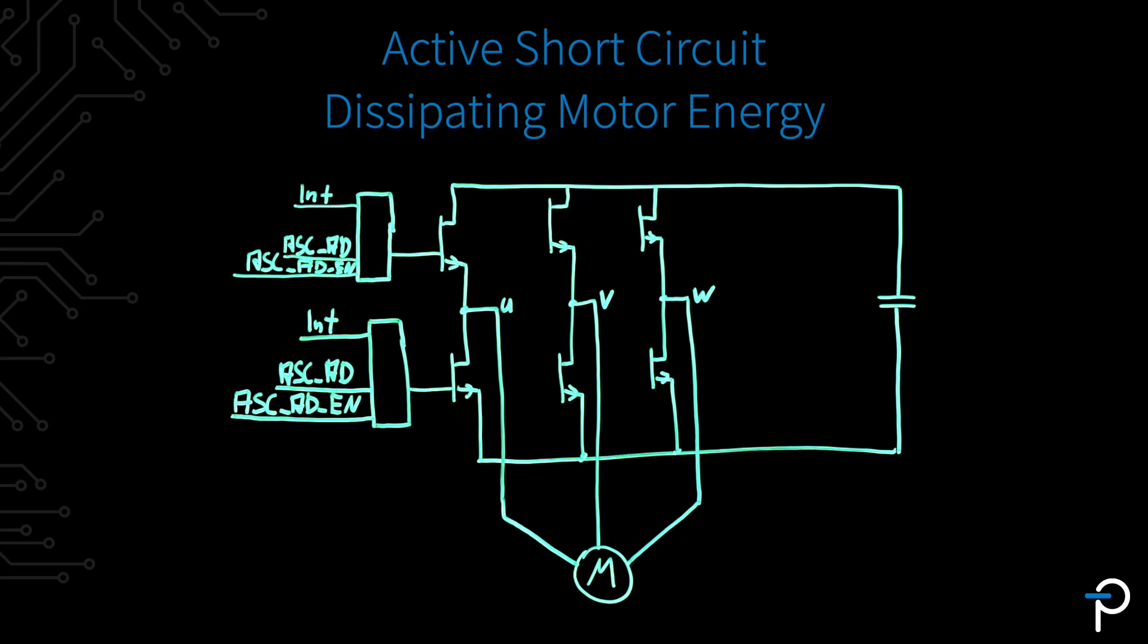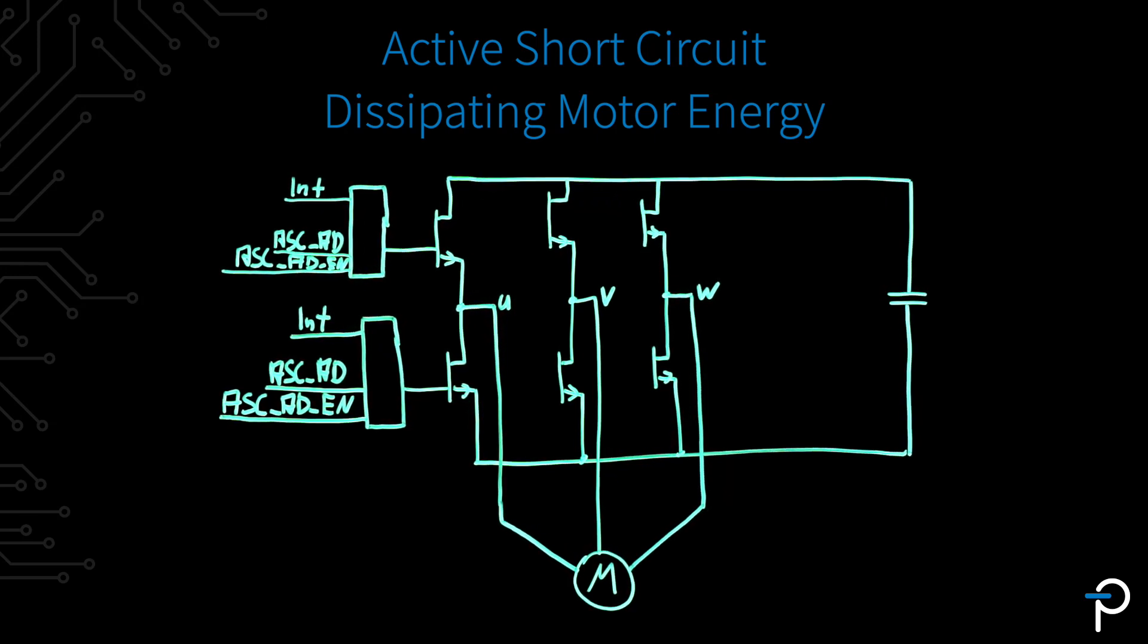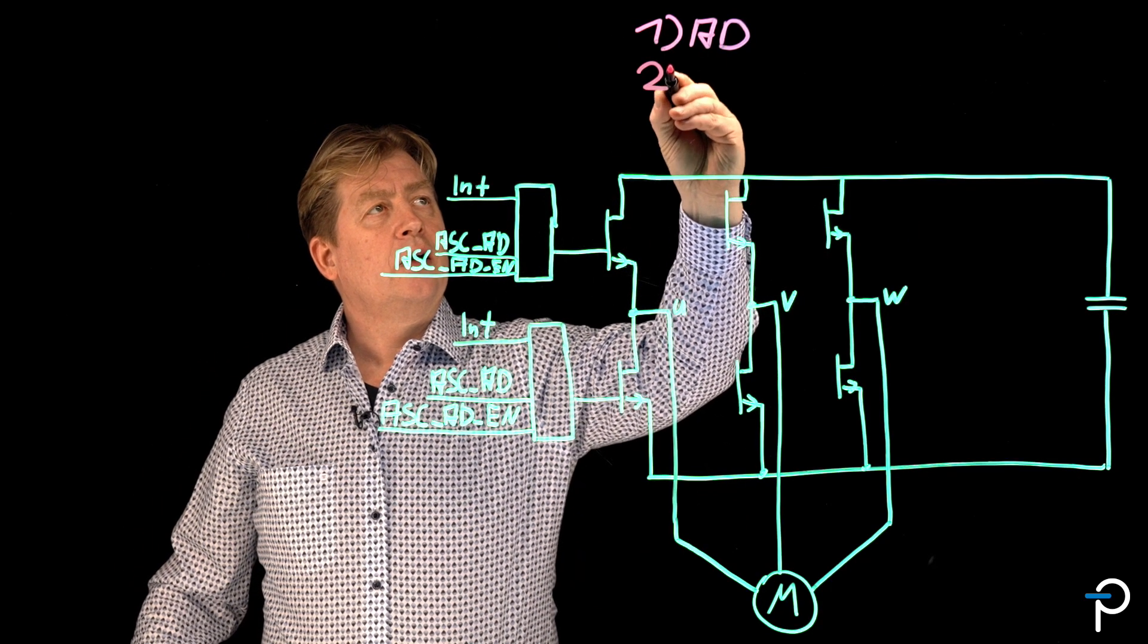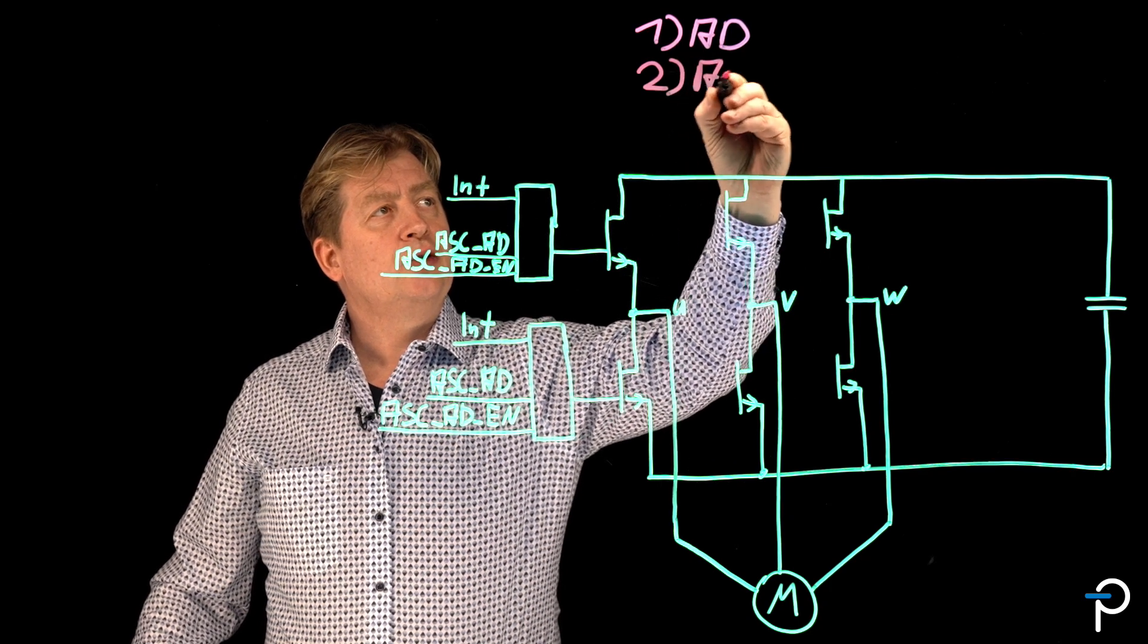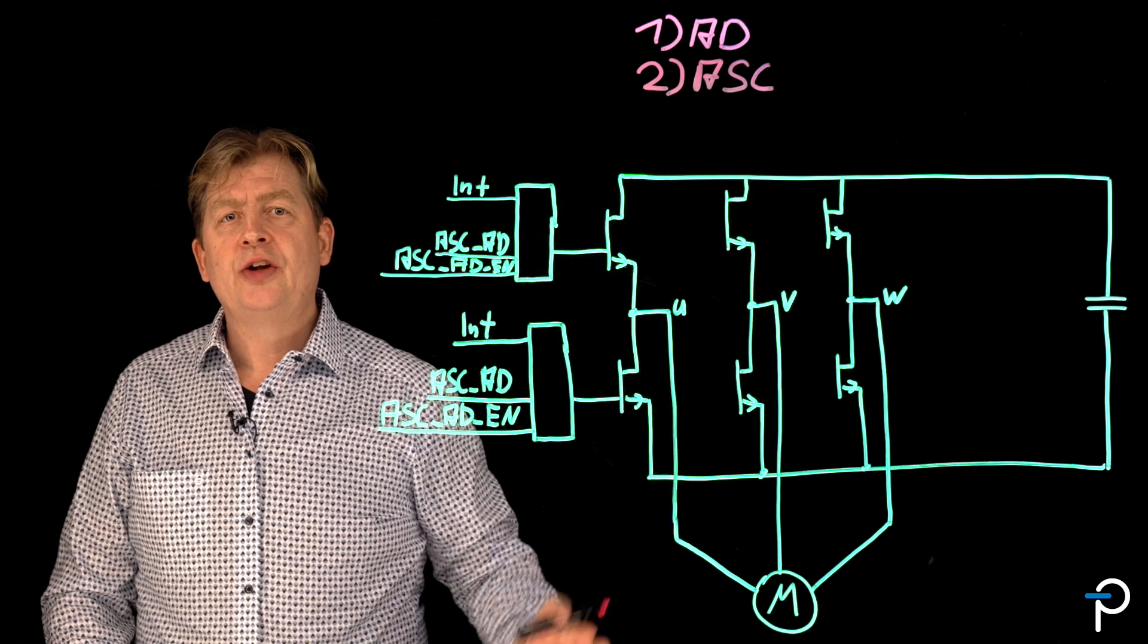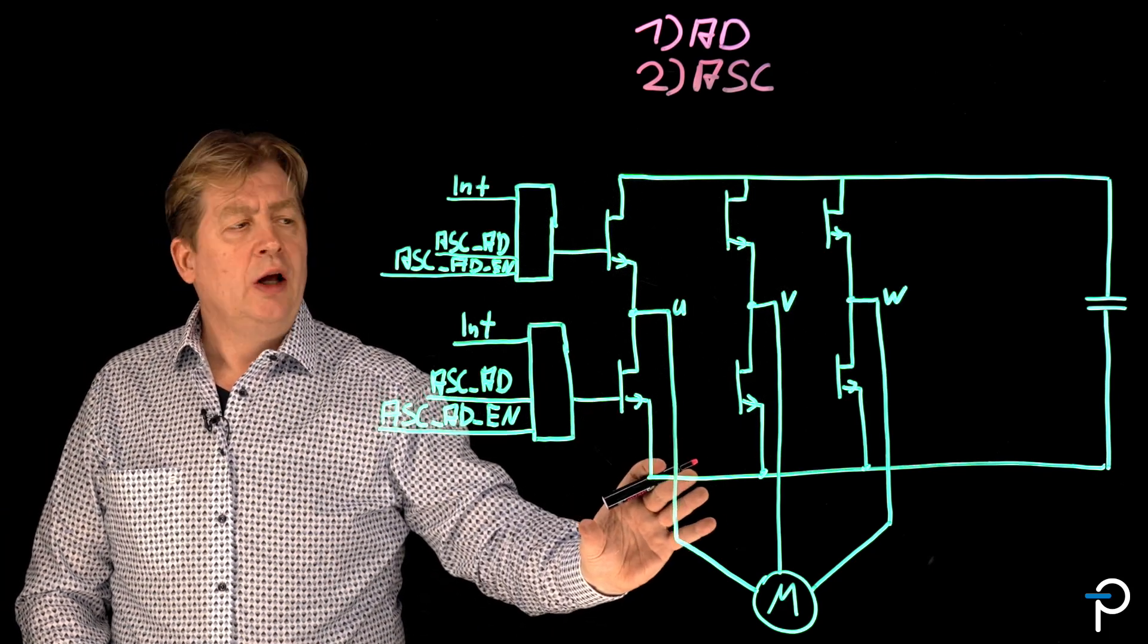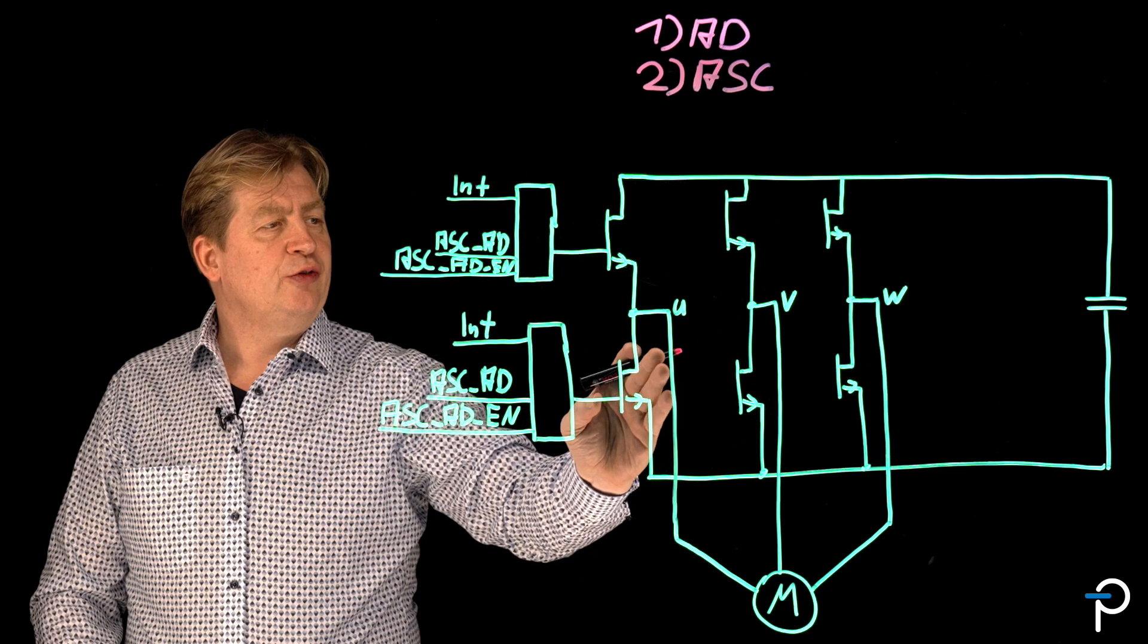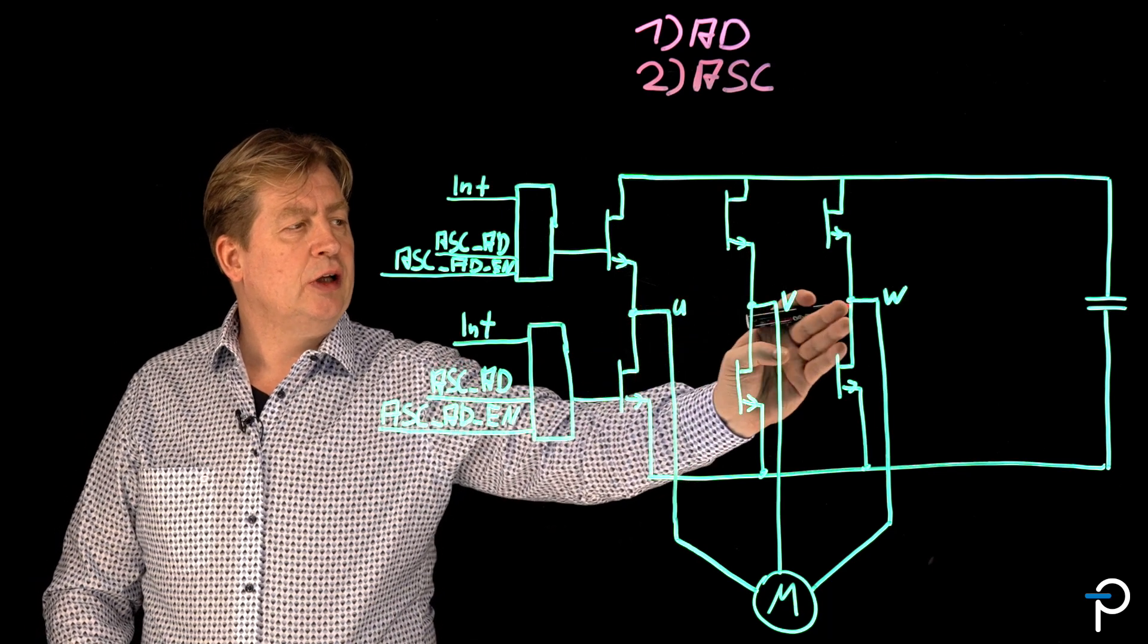Now I have drawn this picture explaining the active short circuit. This takes out the energy of a rotating motor by shorting all the three phases U, V, W.